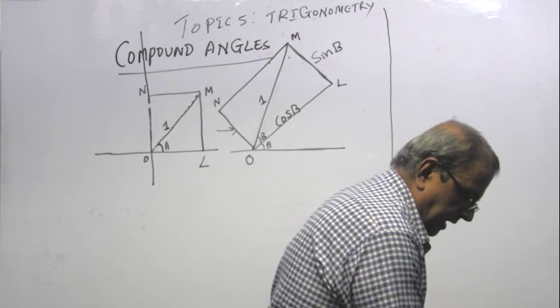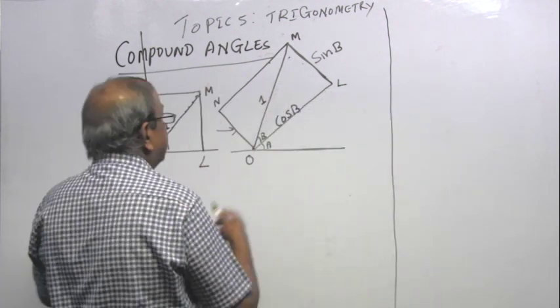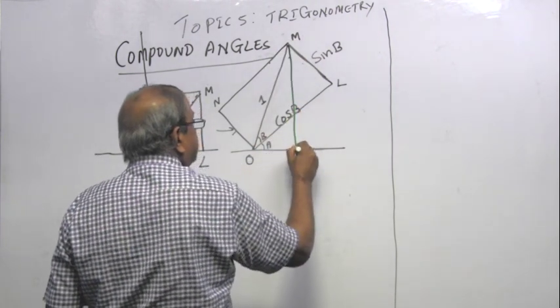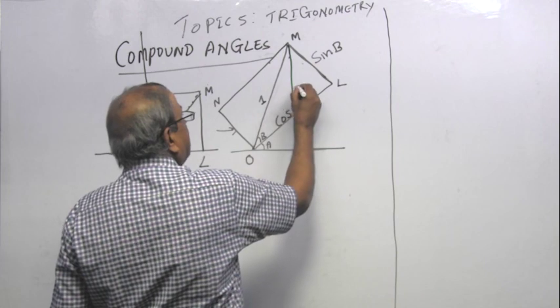Do you agree, that is sin B, M L. Cos B is adjacent over 1. So that is cos B. Now that is the angle A. I want to find out how high is M above the X axis. I will draw that horizontal surface.